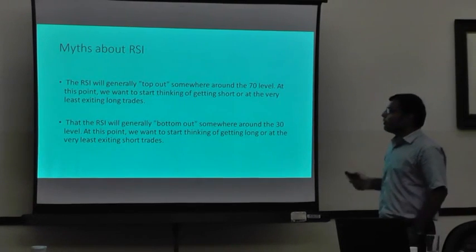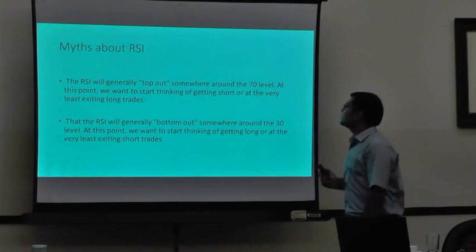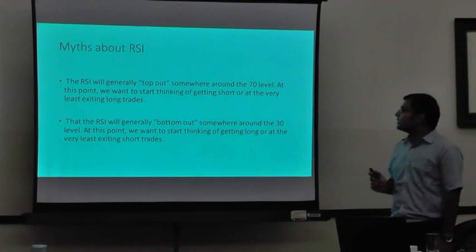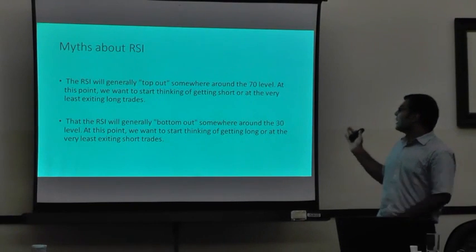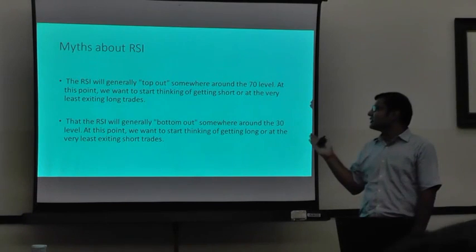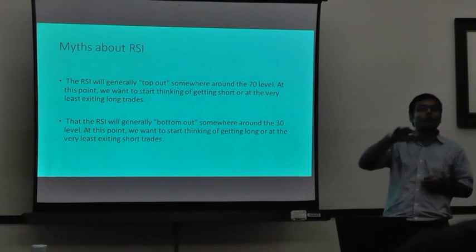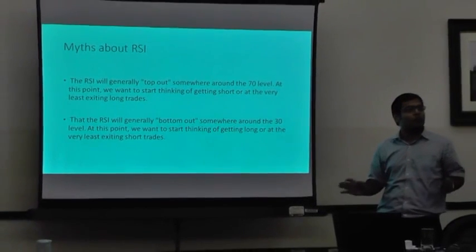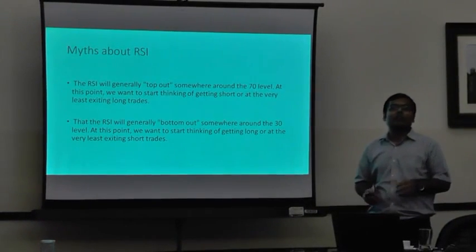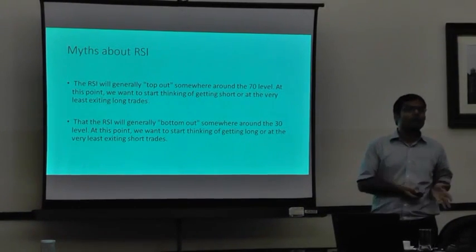The first myth about RSI: RSI is generally discussed around the 70 level. At this point, we want to start thinking of getting short, or at least exiting our long trade. Basically, when RSI moves above 70, we think the market is overbought, and we should at least short or get out of the long trade.